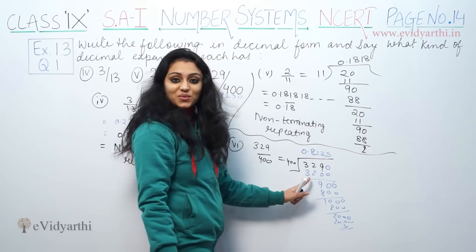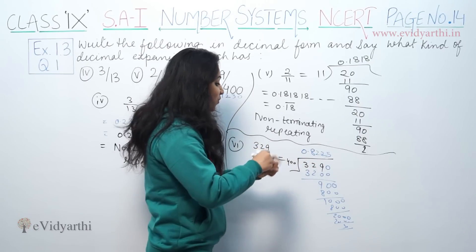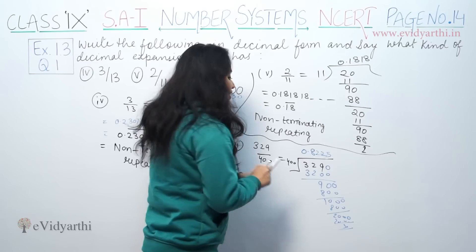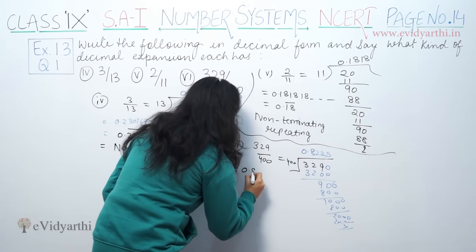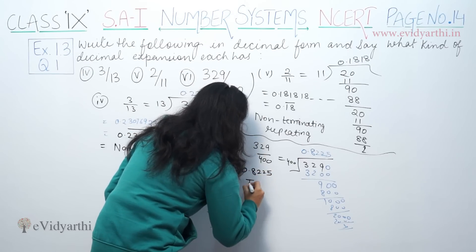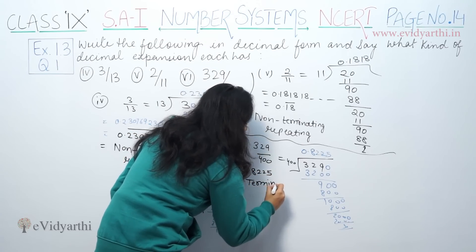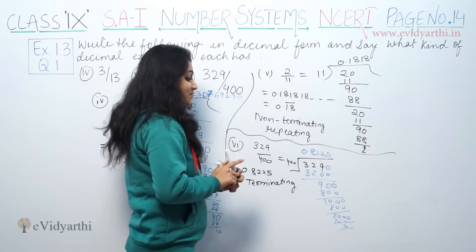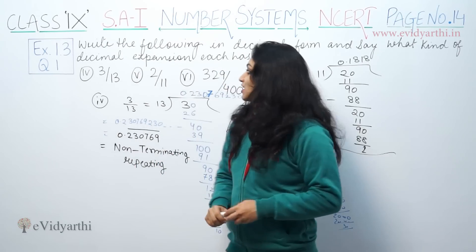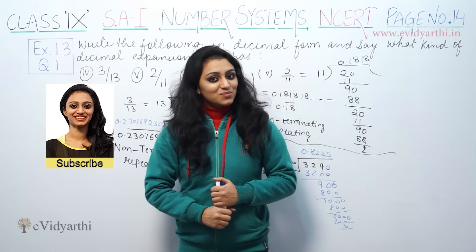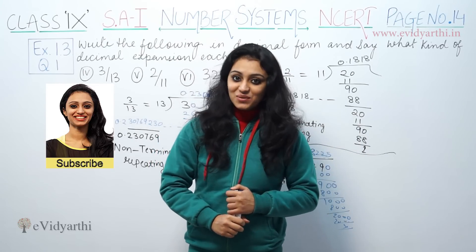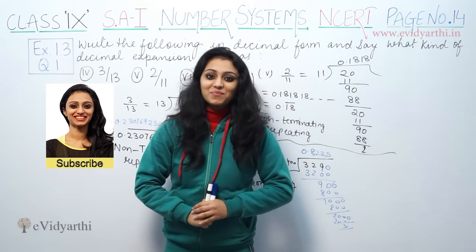Remainder is 100. So 400 goes into 1000, 2 times, which is 800. Remainder is 200. 5 times 4 is 20. So this is 0.825. So this has a terminating decimal expansion. This was question 1 from exercise 1.3. See you in the next video for some more questions.